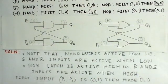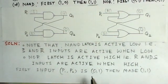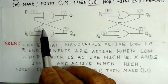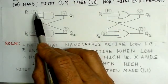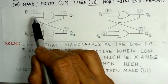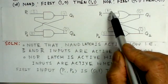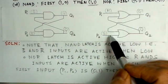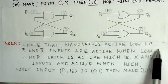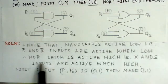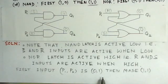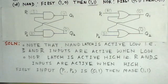The NAND latch is active low, meaning S-bar and R-bar inputs are active when low. The NOR latch is active high, meaning R and S inputs are active when high. The input sequence is: first P1, P2 = 0,1 and then it is made 1,1.